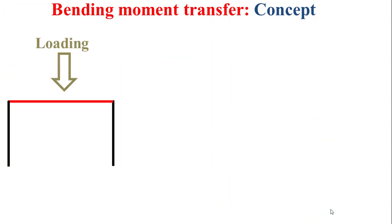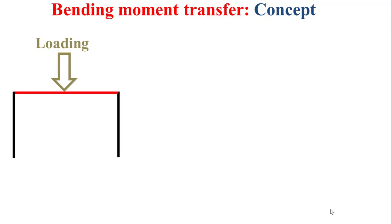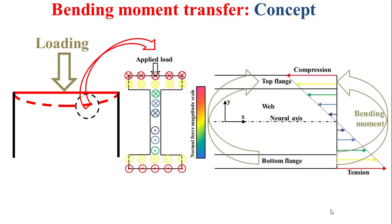Let's consider the 2D basic frame constituting the considered 3D steel frame. Here the beam is depicted in red, while the columns are depicted in black. The beam is loaded, so it will be bent. If we examine the cross-section of the bent beam, we will find normal forces applied perpendicularly to the cross-section. We have compression on the side of the applied load and tension on the opposite side, and compression and tension will be amplified as we approach the flanges.